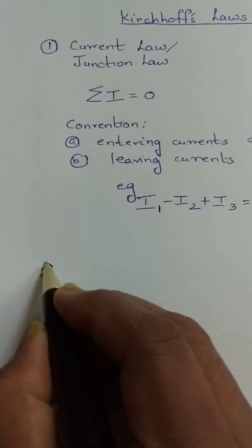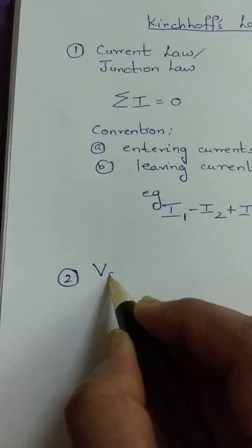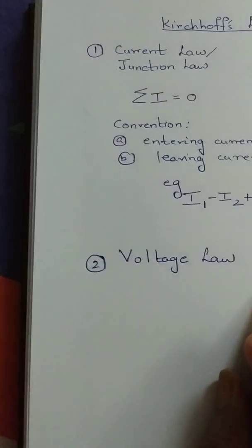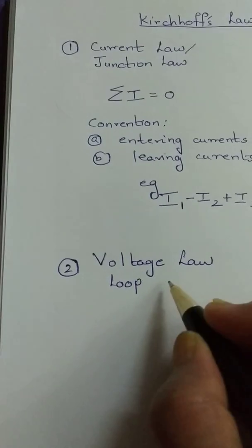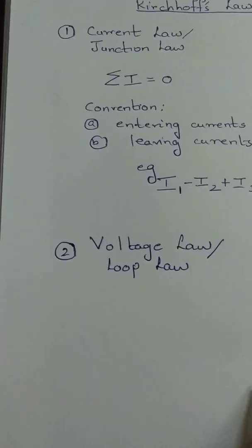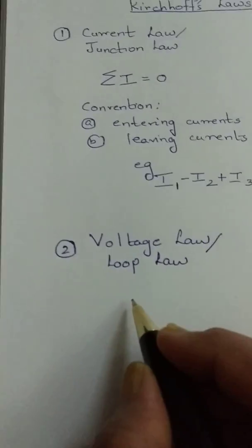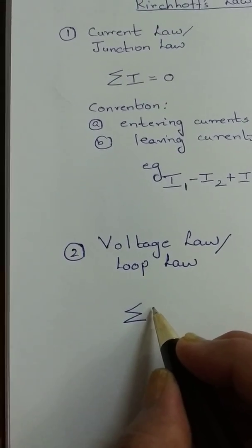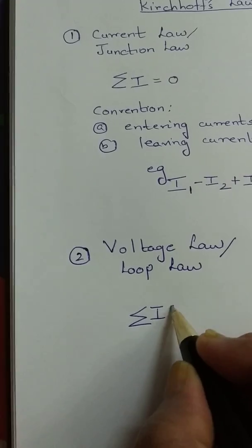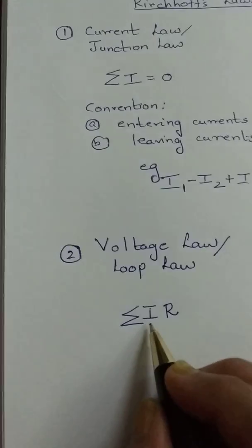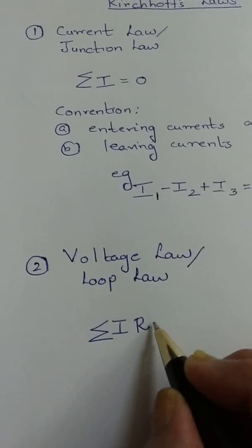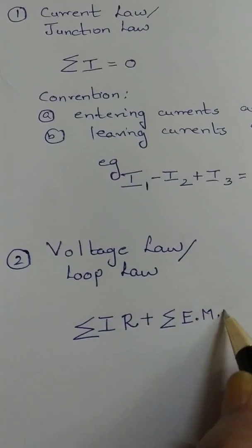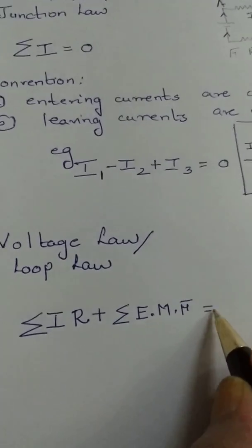The second law is known as the voltage law, also known as the loop law. The law states that the summation of all the potential drops — where potential difference V equals IR — plus the EMFs, is equal to zero.